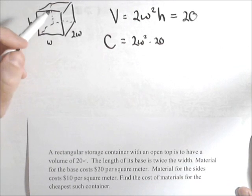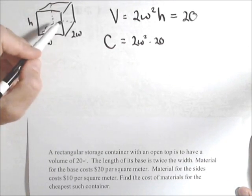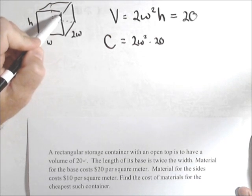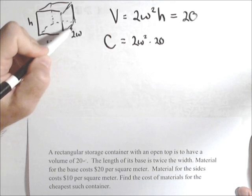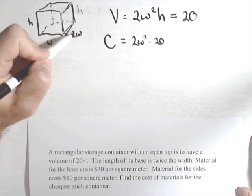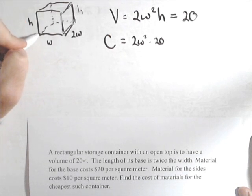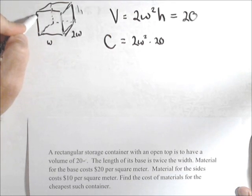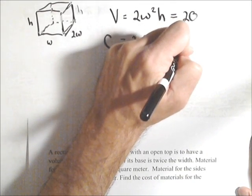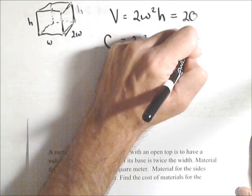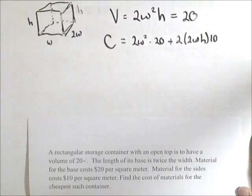Now we need to do the cost of the sides, which are only $10 per square meter. So let's take this side here. Well, it's 2w this way and h this way. So it's 2w times h. Well, so is this side that's opposite it. So we got two sides that are 2wh. And they cost $10 per square meter.